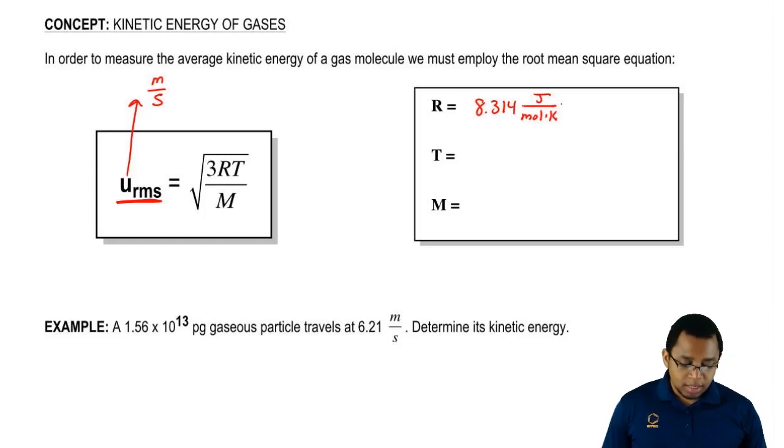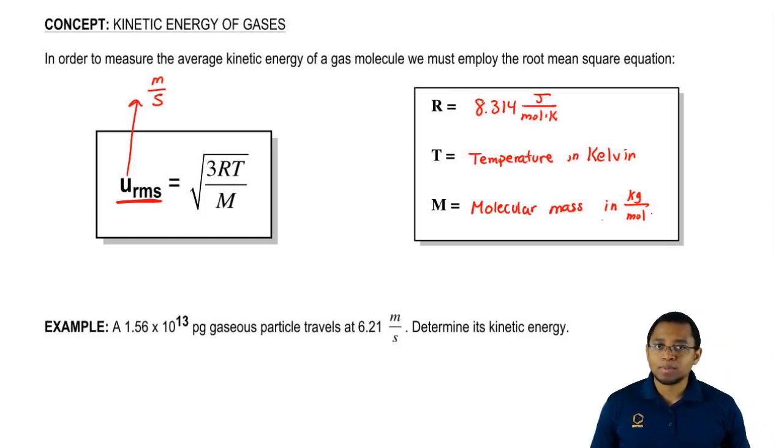Here, T represents temperature again in Kelvin. And here, capital M means molar mass or molecular mass. But here, it's different. We're used to seeing molecular mass or molar mass in grams per mole. But in this case, in this equation, it's going to be in kilograms per mole. So you have to remember that. It's in kilograms per mole.